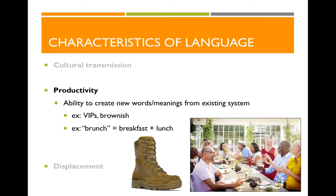The second characteristic of human language is productivity — the ability to create new words with new meanings from the existing system. Productivity is one of the most obvious elements of how magnificent human language is. We are able to make up new words whatever the scenario. For example, with acronyms like VIP: we know VIP stands for 'very important person,' and we build on those existing words to create a smaller, more efficient form of communication to represent that concept.